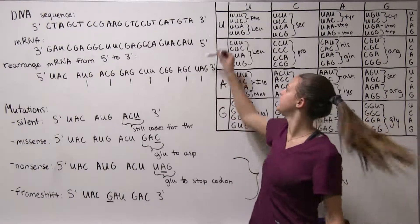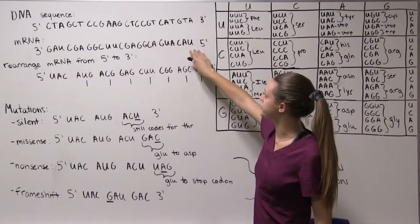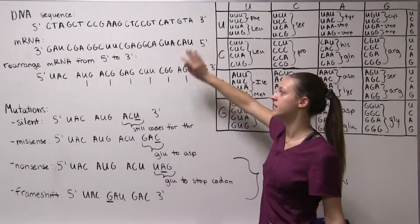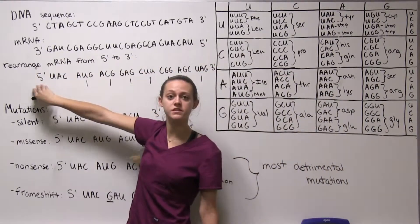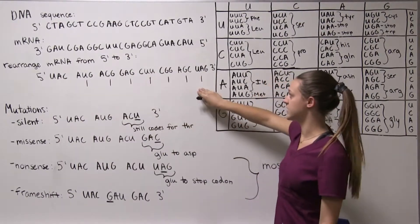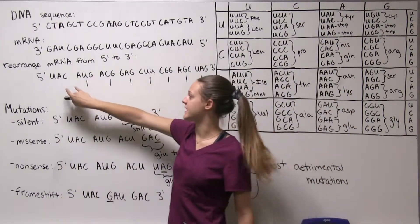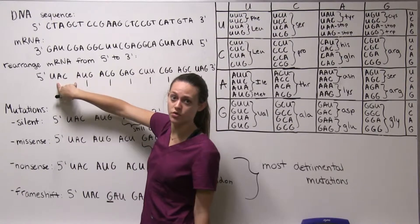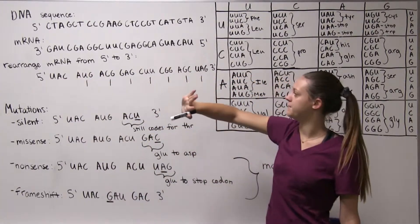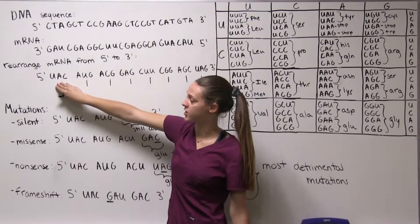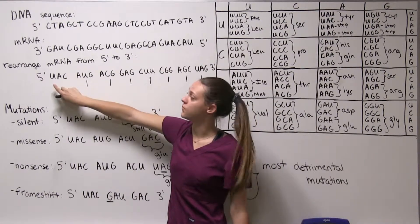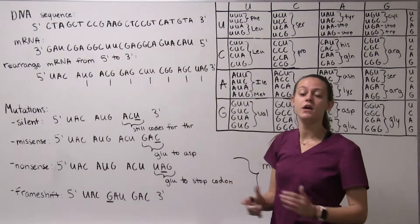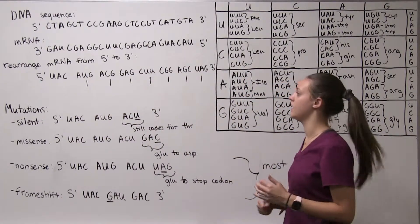Now once you have this step you have to recognize that this is written three prime to five prime and we want to rearrange this so that it's five prime to three prime. When I do this I like to separate it already into my codons. Three base pairs make up a codon so when I rearrange it I go ahead and make my codons with my three bases.